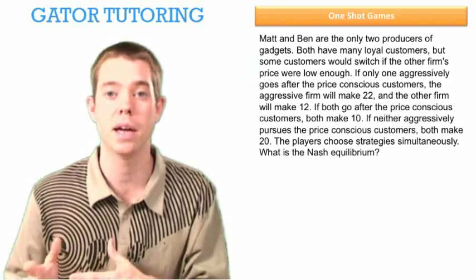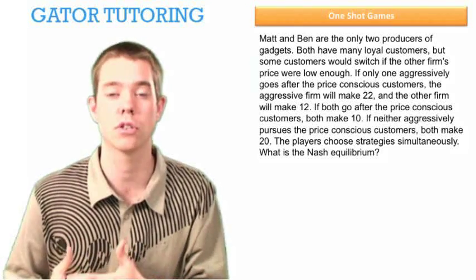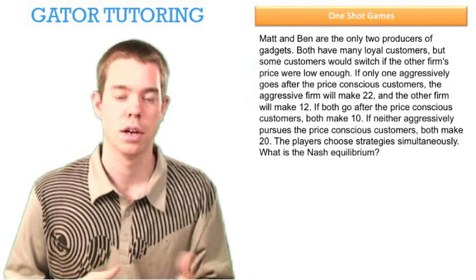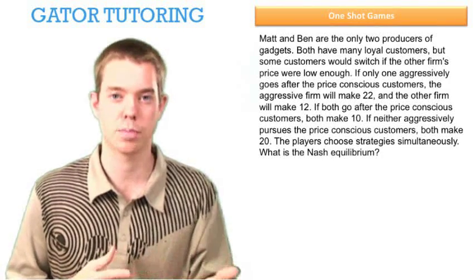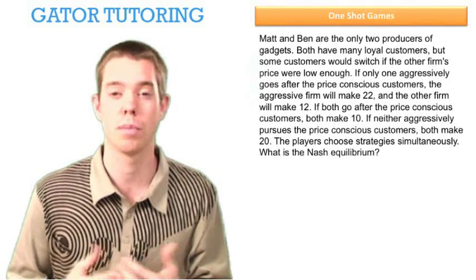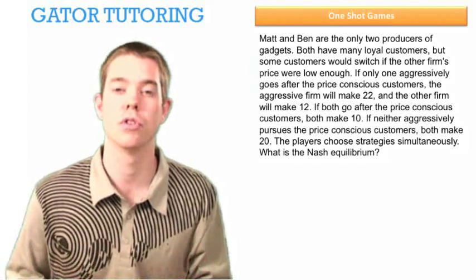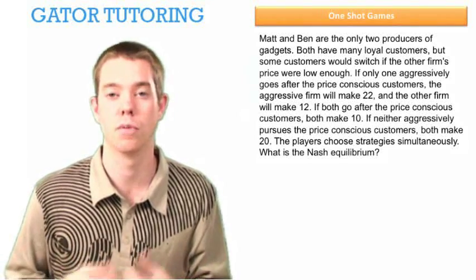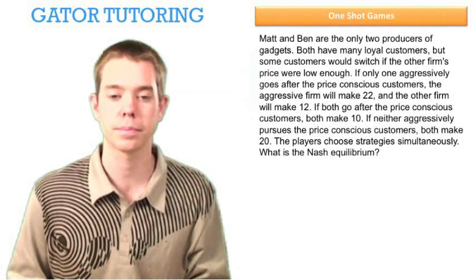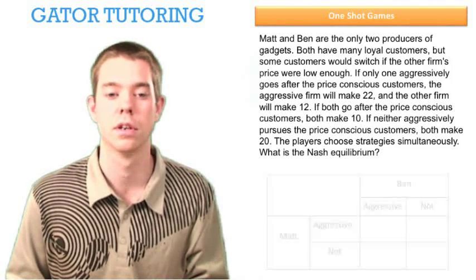Likewise, Ben doesn't know what Matt's doing when he chooses his strategy. So Matt's deciding: am I going to price aggressively, am I going to go after these price-conscious customers aggressively or am I not? He makes his decision with no idea of what Ben's going to do. That's what we mean by simultaneously in this context.